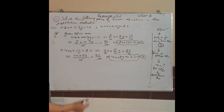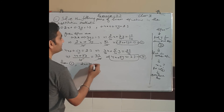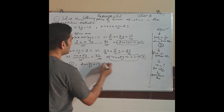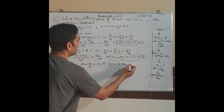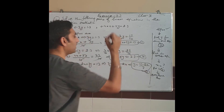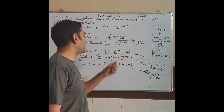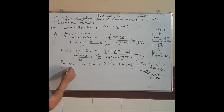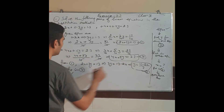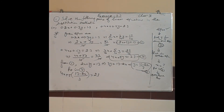Now follow the same steps. From equation 1: 2x + 3y = 13. Find y: 3y = 13 − 2x, so y = (13 − 2x)/3. Give it number 3. Now put this value of y into equation 2: 4x + 5·[(13 − 2x)/3] = 23.